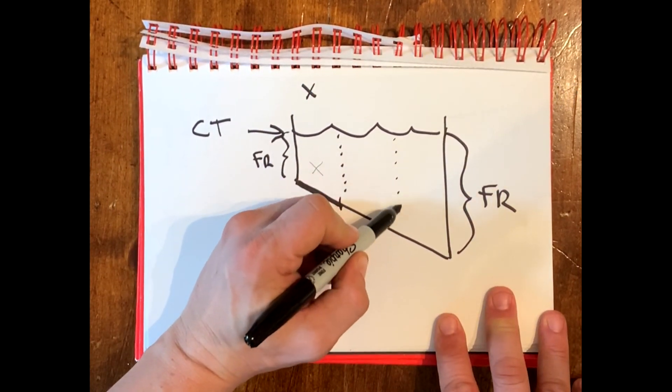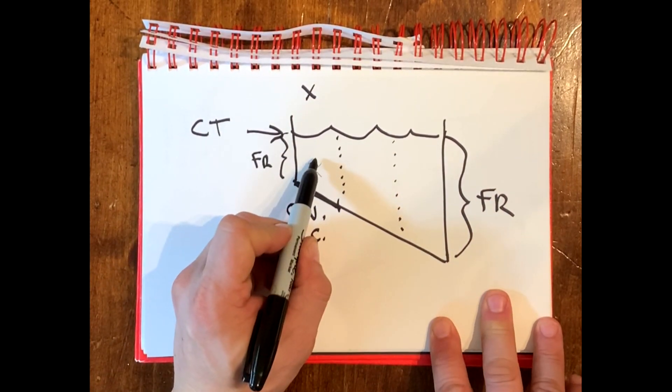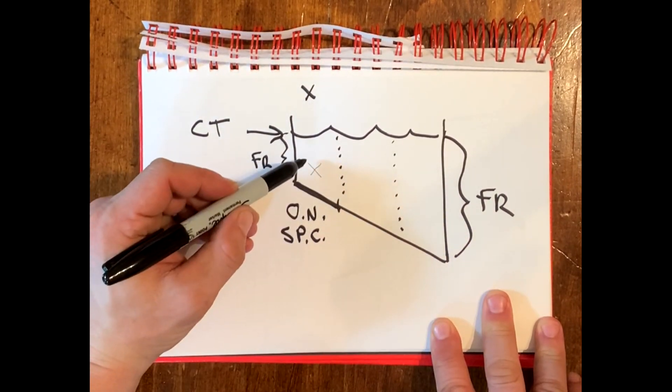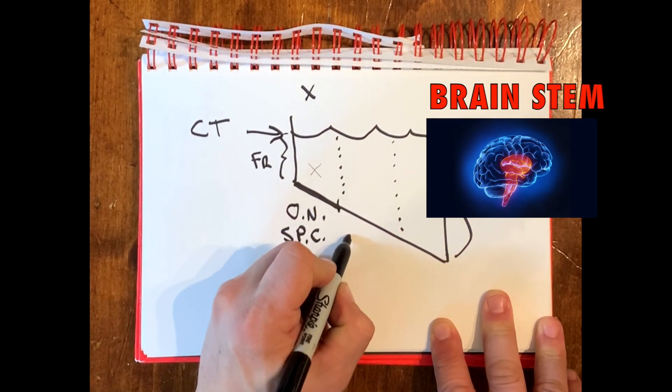Now if you think about sort of this middle area, which has more functional reserve than the optic nerve and spinal cord, but still not a lot, this is the brain stem.